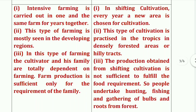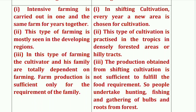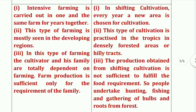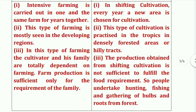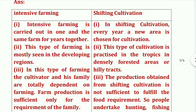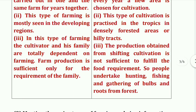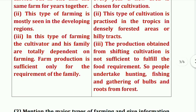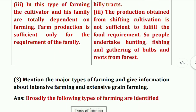In intensive farming, the cultivator and his family are totally dependent on farming, and farm production is sufficient only for the requirement of the family. In shifting cultivation, the production obtained is not sufficient to fulfill food requirements, so people undertake hunting, fishing, and gathering of bulbs and roots from the forest.